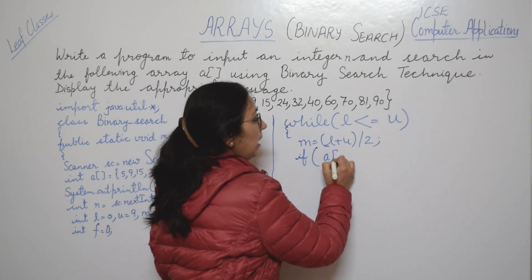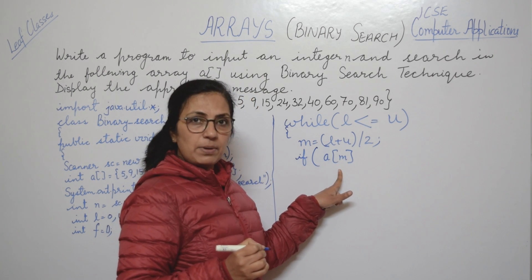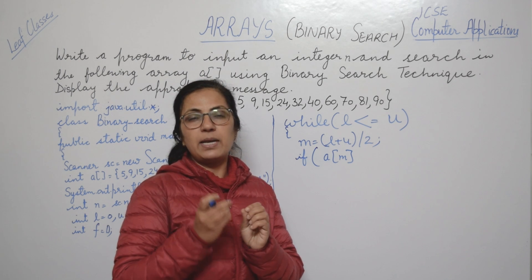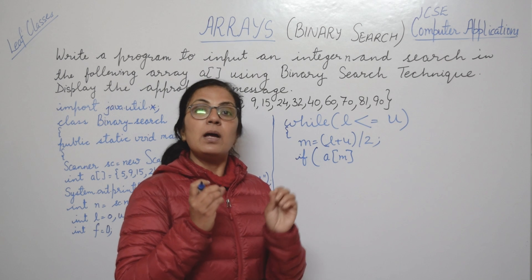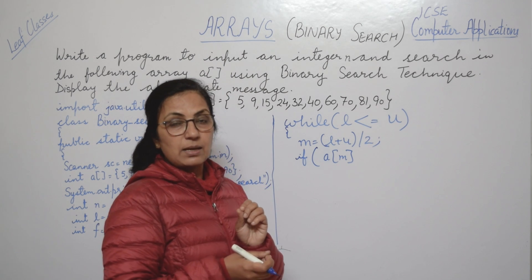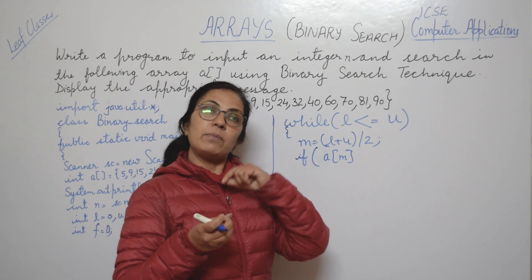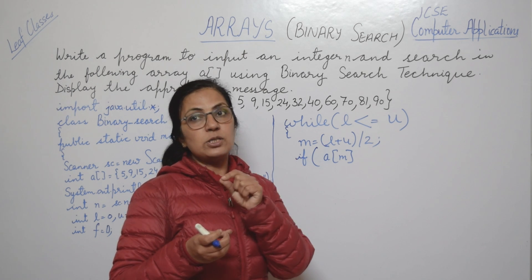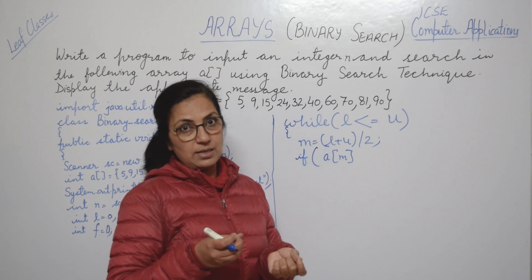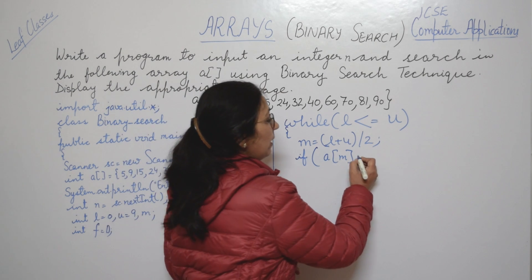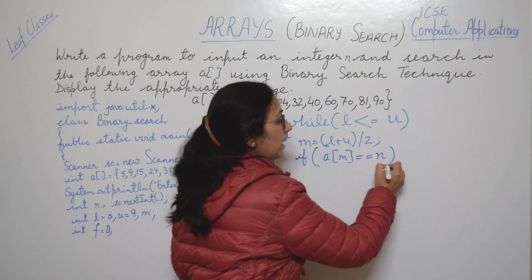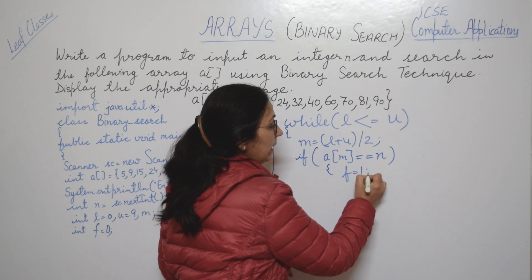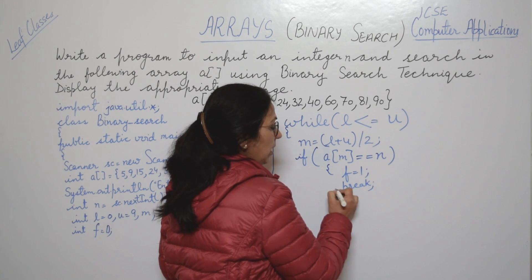M is the index number, and within the square brackets it denotes the index number. If A[m] equals N, the number we want to search, then we set the flag f = 1 and break out of the loop — we don't need to search further.